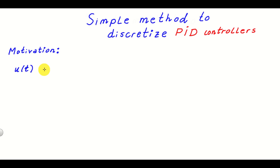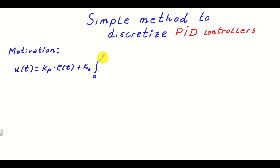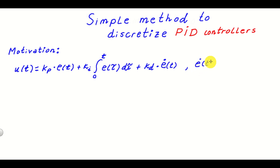The control input u(t), where u is the control signal and t is time, is equal to kp — the proportional gain — multiplying the control error e(t), plus ki — the integral gain — multiplying the integral of the error from 0 to the current time t of e(τ) dτ, plus the derivative gain kd multiplying the first derivative of error with respect to time, ė(t) = d/dt of e(t). This is a continuous time representation of the PID control algorithm.